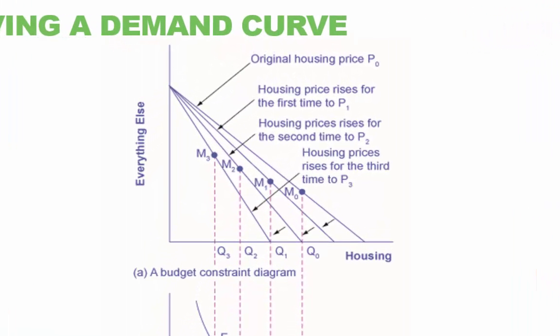In the upper graph, we see that as the price for housing increases from P0 to P1 to P2 to P3, the budget constraint on the upper part of the diagram shifts to the left. The utility maximizing choice changes from M0 to M1 to M2 to M3. As a result, the quantity demanded for housing shifts from Q0 to Q1 to Q2 to Q3.